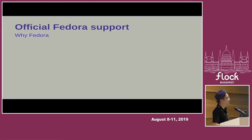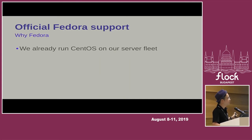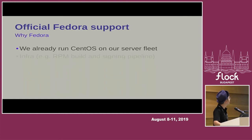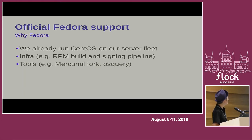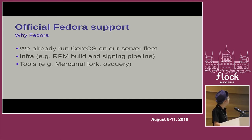Last year we decided to standardize and pick Fedora, for multiple reasons. One is that we already run CentOS on our server fleet, so we have all the expertise to deal with RPMs. There is already a lot of internal infrastructure to support it — how to build RPMs, how to deploy them. For instance, a lot of our internal tools, like our slightly modified version of Mercurial, are shipped as an RPM, and the same package can be used on both our servers and desktops.